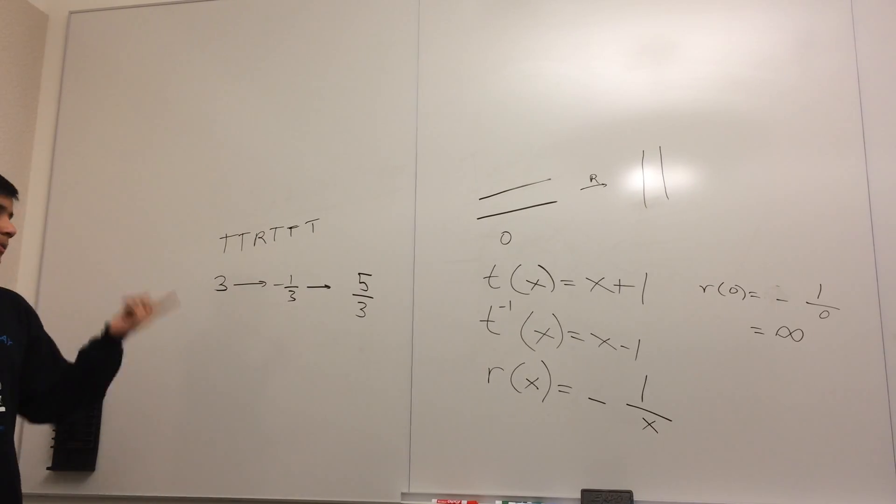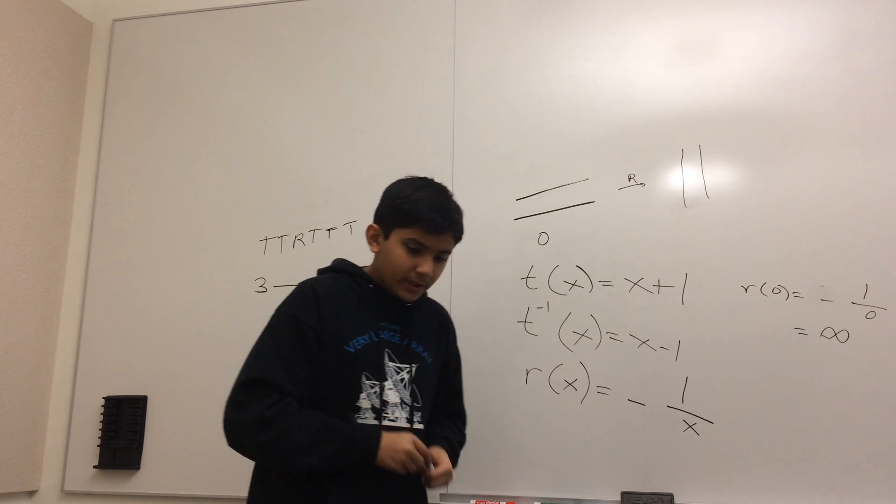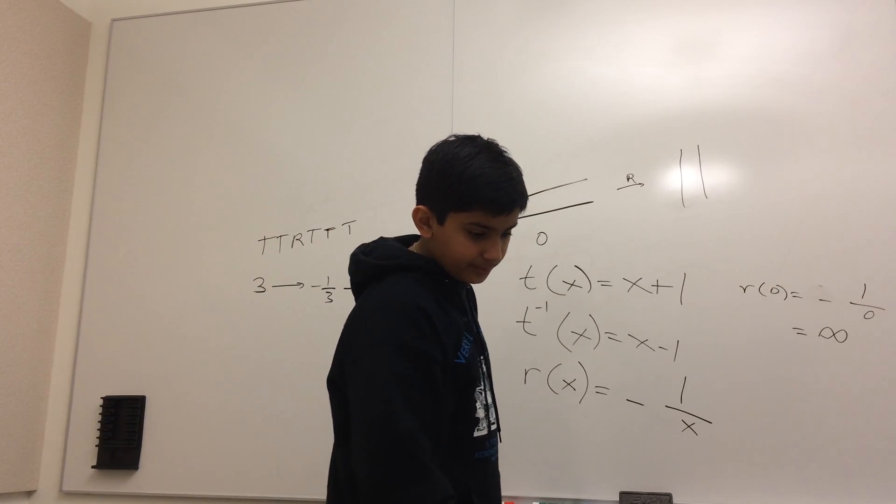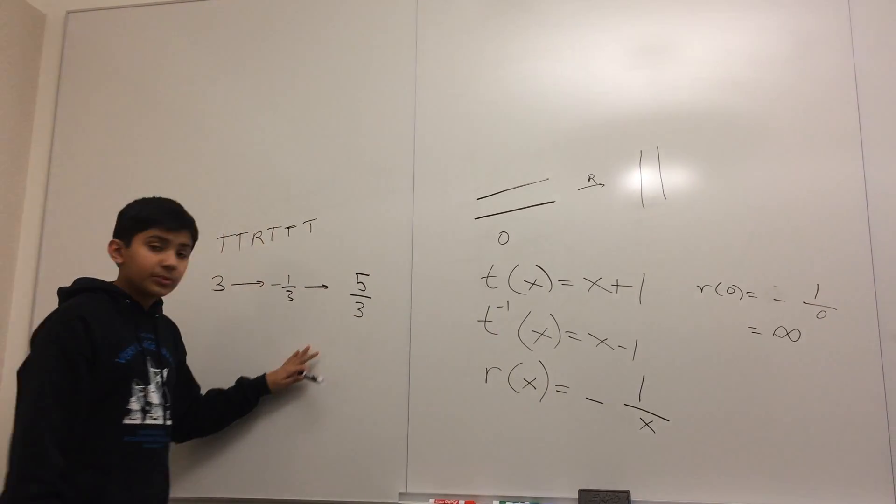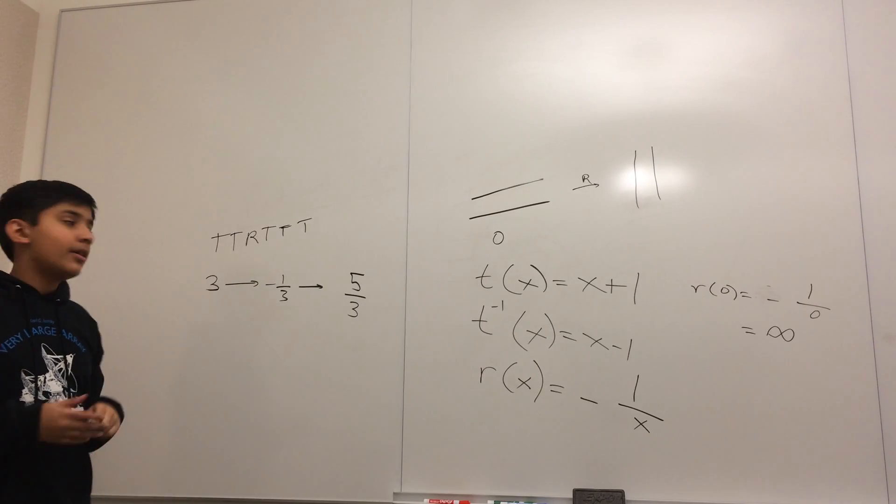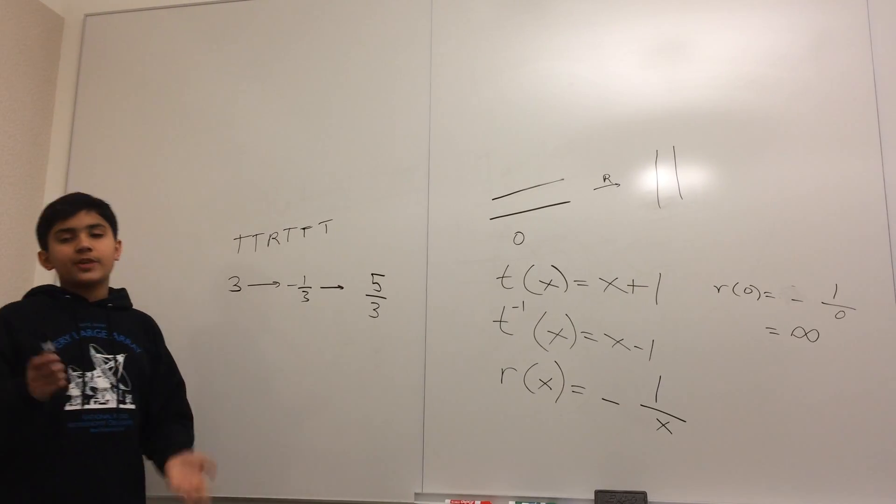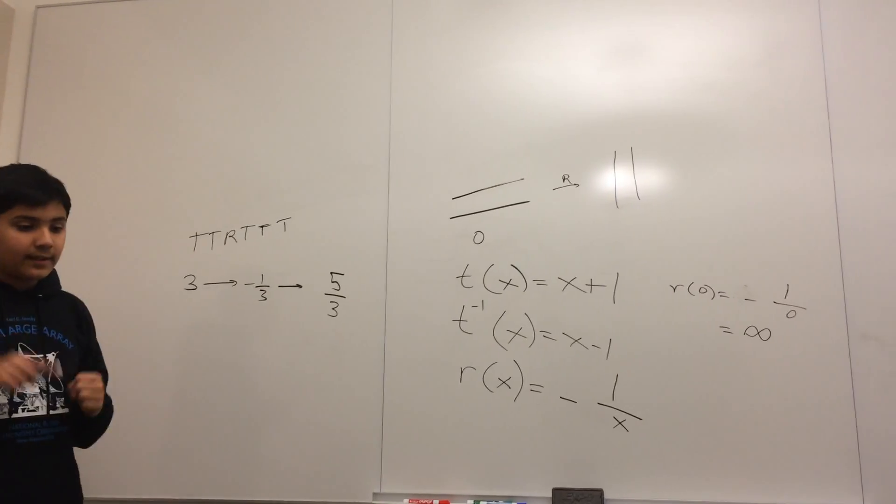Like this, for any rational tangle, we can calculate its number. Now, a theorem of Conway, which is pretty difficult to prove, is that if any two rational tangles turn out to have the same number using this scheme, then those tangles are in fact the same. So we will take that theorem for granted.